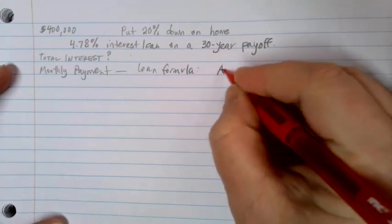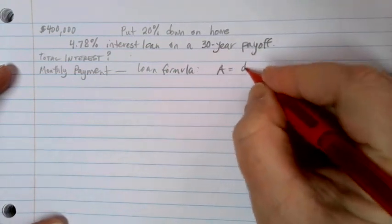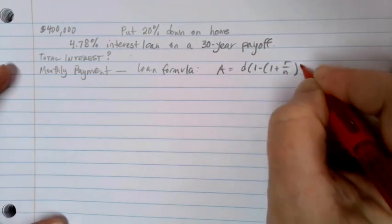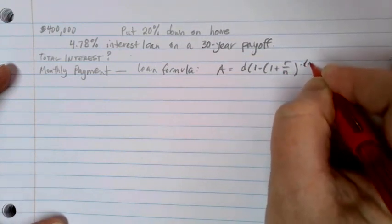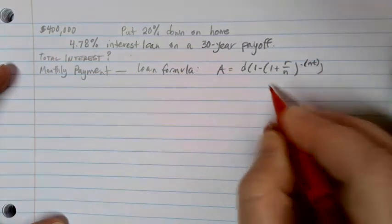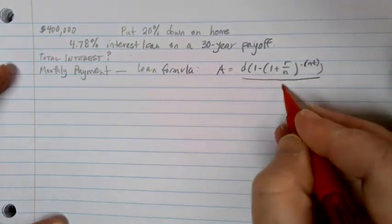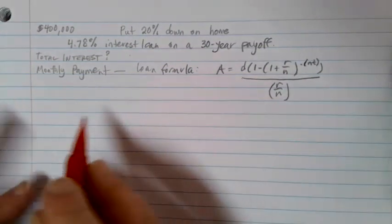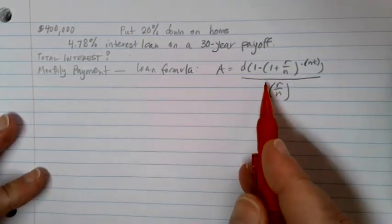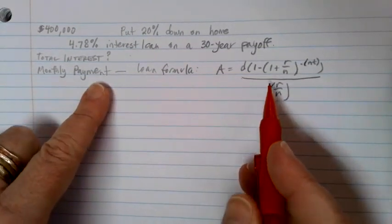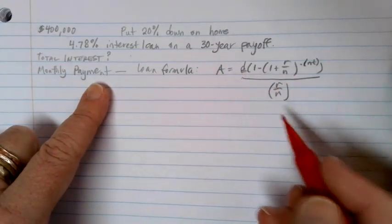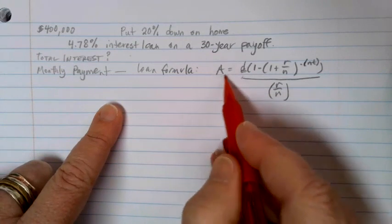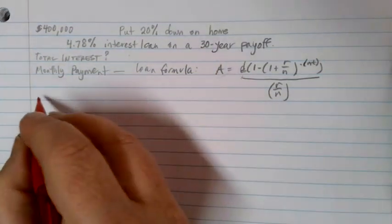And if we look that up, that's going to be A equals D times 1 minus 1 plus R over N to the negative NT power, all divided by R over N. So let's go through and first of all figure out the monthly payment. Your monthly payment is the D value. That's what I'm going to solve for. The first thing that I need to figure out then is A, and A is going to be the amount of my loan.